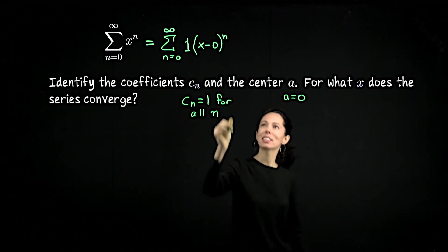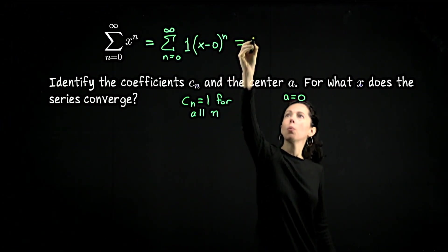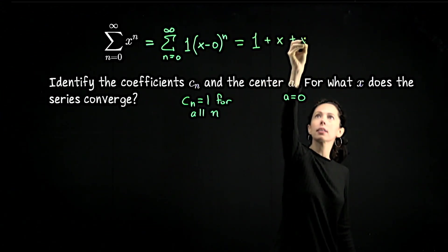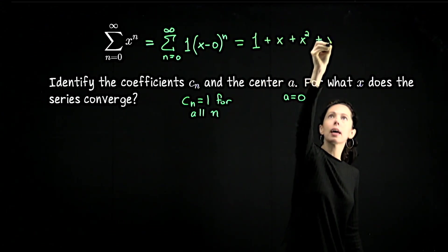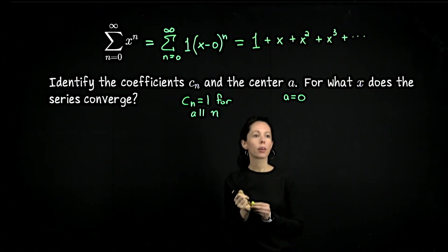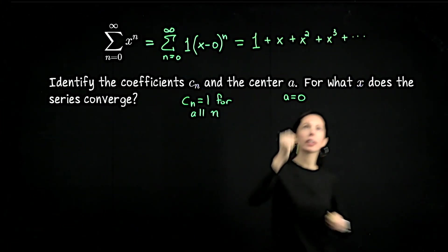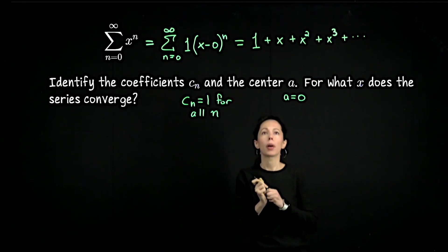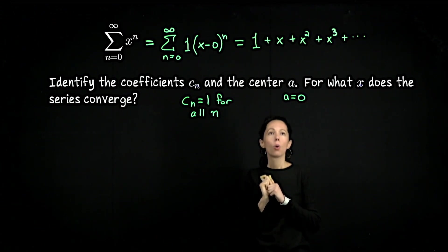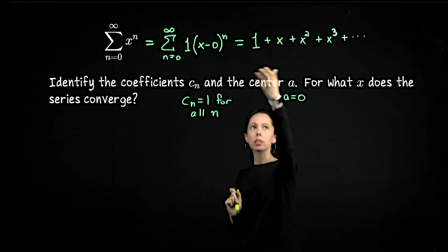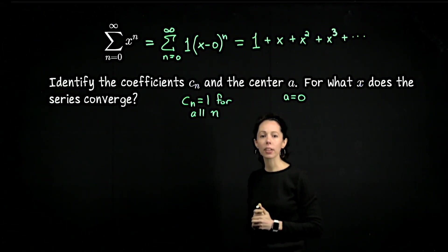That is our series presented in a way that looks a little bit more like the notation on the previous slide. If I now expand this, it's going to look like 1 plus x plus x squared plus x cubed, and we do that forever. That's our infinite series with the variable x. What values of x could I plug in to be able to say that this series adds up to something?